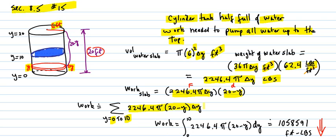So here is your expression of your work, all those work pieces added up, and you get your integral and it works out to this number in foot pounds: 1,058,591.